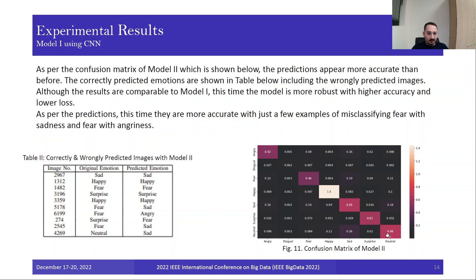As for the confusion matrix shown here, the predictions appear more accurate than the first model. Although the results are comparable to model 1 overall, this time the model is more robust with higher accuracy and lower loss. As for the predictions, this time they are more accurate with just a few examples. Here we include 10 images with the original emotion and predicted emotion. With model 2, the predictions were more accurate. We have just a few examples where the program misclassified fear with sadness and fear with angriness.